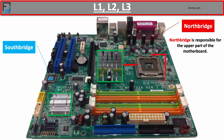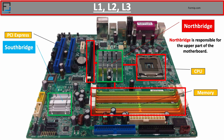The North Bridge is located in the upper or northern part of the motherboard — near the CPU — and is directly connected to it. It is also connected to memory and AGP or PCI Express slots. The AGP port is a fairly old video port which has been replaced by the PCI Express port. For the CPU to communicate with the memory and the video bus — AGP or PCI Express — it must first go through the North Bridge chipset. It acts as an intermediary of communication between the processor, the PCI Express port, and memory.